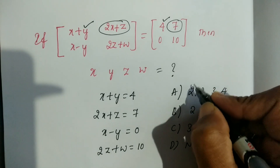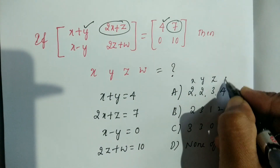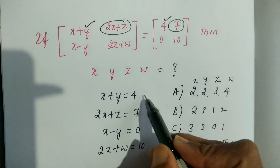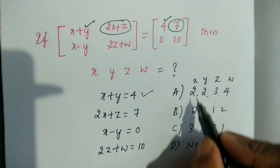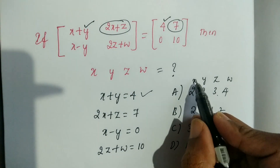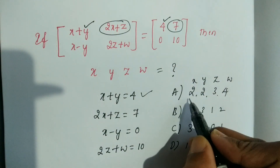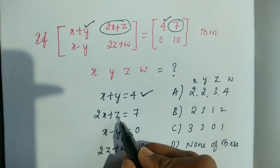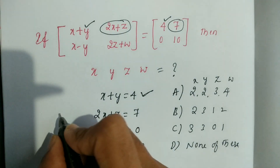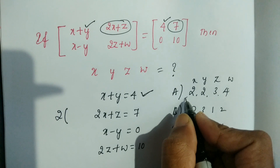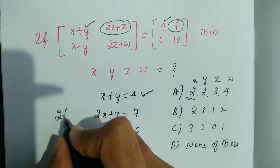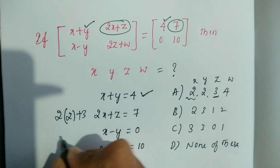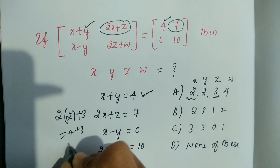So, from Option A: x = 2, y = 2, z = 3, w = 4. Let's verify: x + y = 2 + 2 = 4 ✓. That holds. Next, 2x + z = 2×2 + 3 = 4 + 3 = 7 ✓. That also holds.